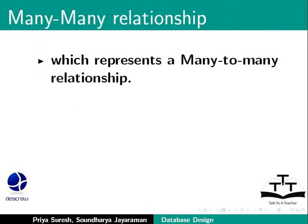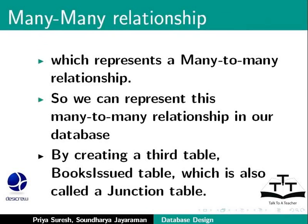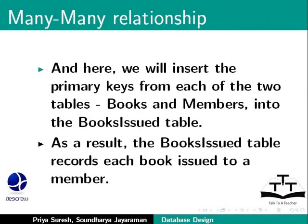Many-to-many relationship. This is the database. There is a table called Books Issued table, which is the Junction table. Here are the primary keys and the other tables. Books and Members are the Books Issued table. The result is the Books Issued table that records the members. The Junction table has one-to-many relationships.